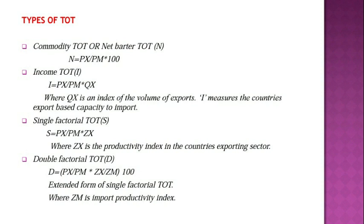There are different types of Terms of Trade. The first is Commodity TOT or Net Barter TOT, represented by n. The formula is: n = (Price of X / Price of M) × 100, that is, price of exports divided by price of imports multiplied by 100.